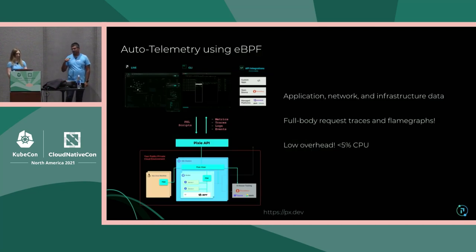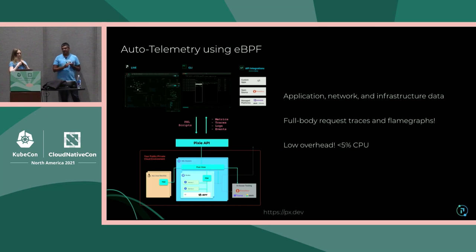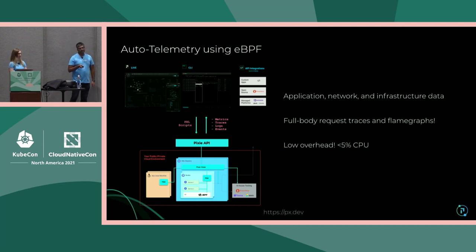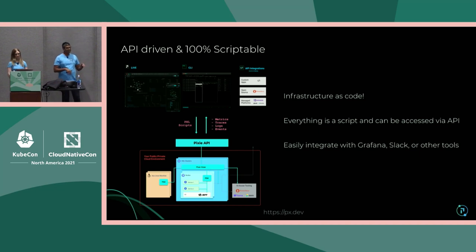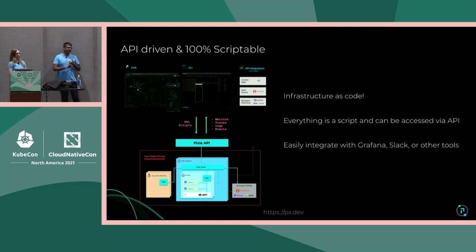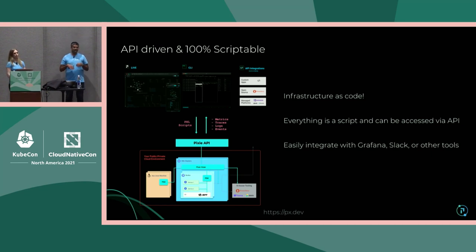A quick overview of Pixie's features. Pixie is an open-source CNCF sandbox project. Using eBPF for auto telemetry, we can capture application, network, and infrastructure data, including application profiles and full body requests, with under 5% CPU overhead — usually under 2%. We understand all the Kubernetes entities and connect things together. The system is 100% scriptable and API-driven — we think of this as infrastructure as code. Everything in Pixie is a script, including our UI, and we can easily integrate downstream tools via our API. We have active Grafana plugins and plugins for other SaaS products.